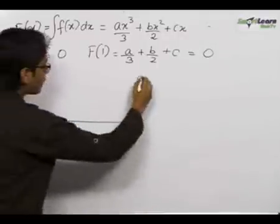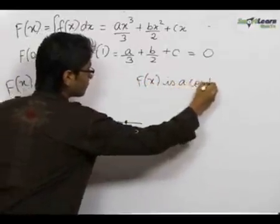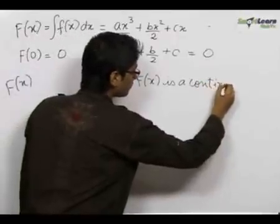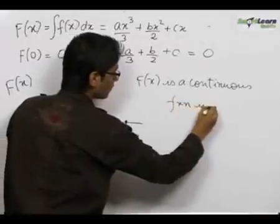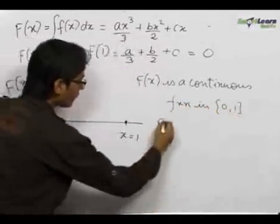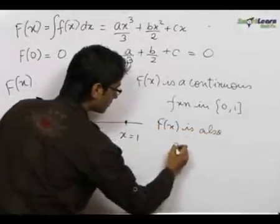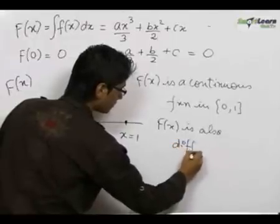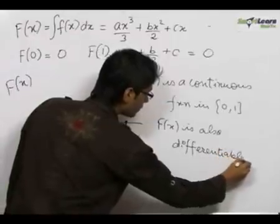F(x) is a continuous function in the given range, and F(x) is also differentiable in the given range which is 0 to 1 here, and the value of F of 0 is equal to F of 1.